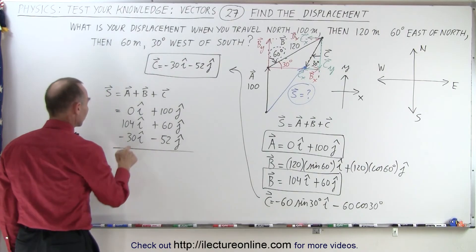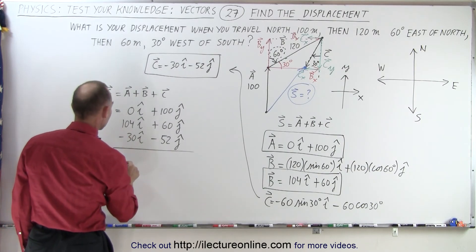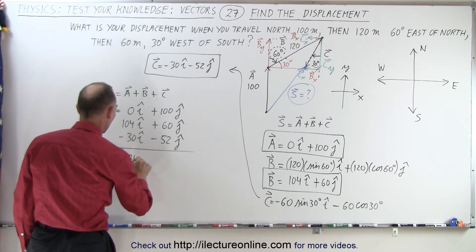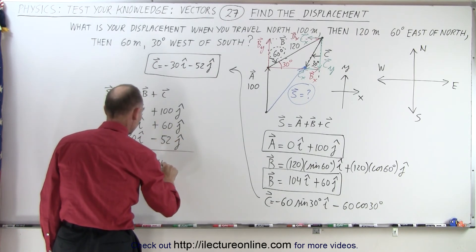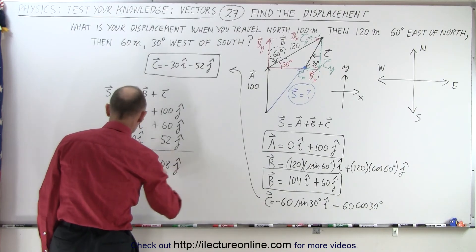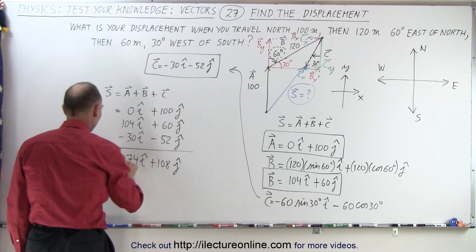When we add all that together, subtract 30 from 104, that would be 74I. Subtract 52 from 60, that's 8, plus 100, that would be plus 108J. And so that is the final displacement vector.